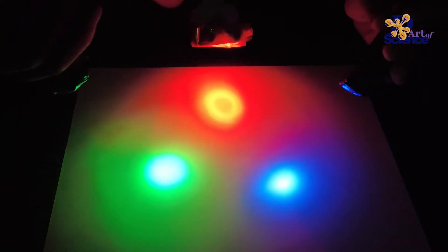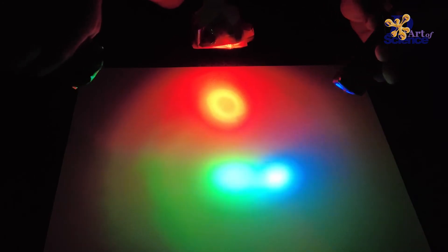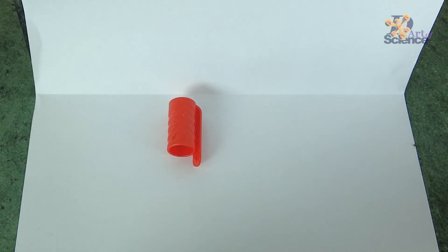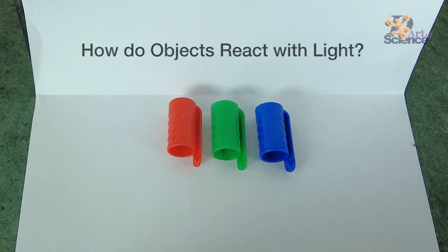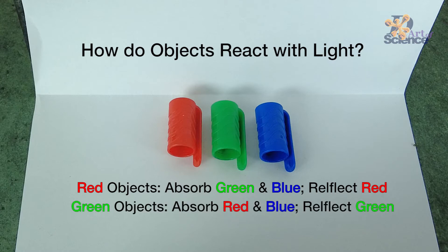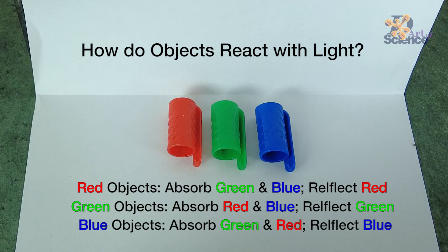Now let's move on to understand how objects absorb and reflect light. We have three objects of the colors red, green, and blue. Under a white light, the red object absorbs blue and green light and reflects red light that enters our eye. Similarly, the green object reflects green light, and the blue object absorbs green and red light and reflects blue.